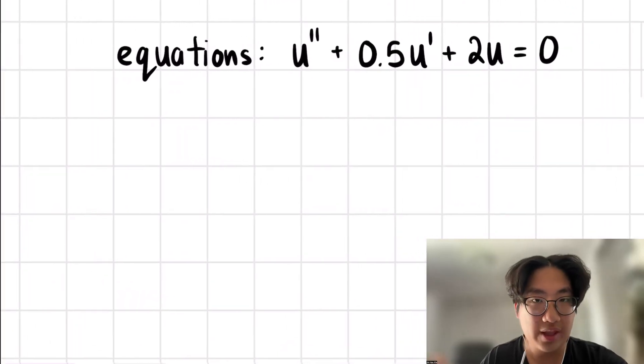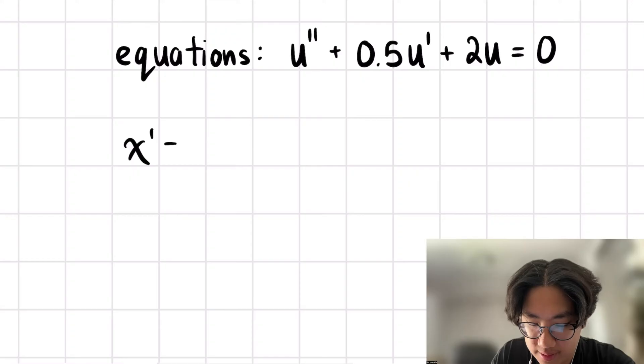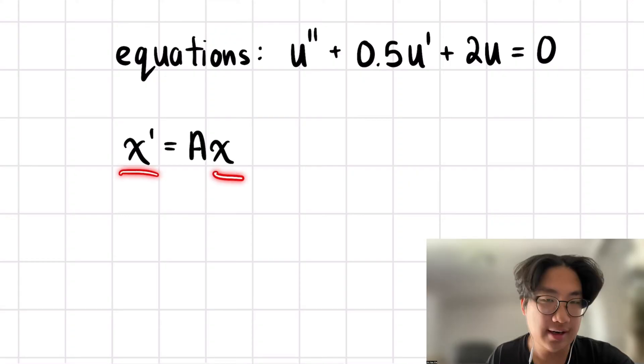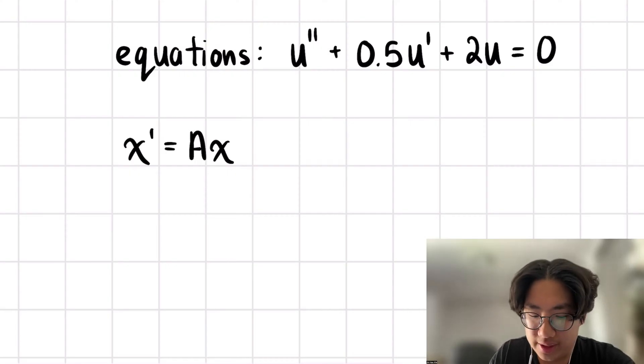So first, I'll go over what that form really looks like. We have x prime is equal to Ax. In this case, x and x prime are vectors of functions. And A here is a matrix, a square matrix. I'll draw this for the two by two case, because this is what we're going to see.